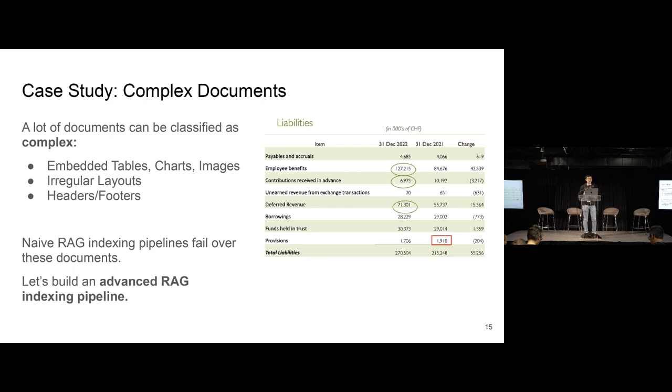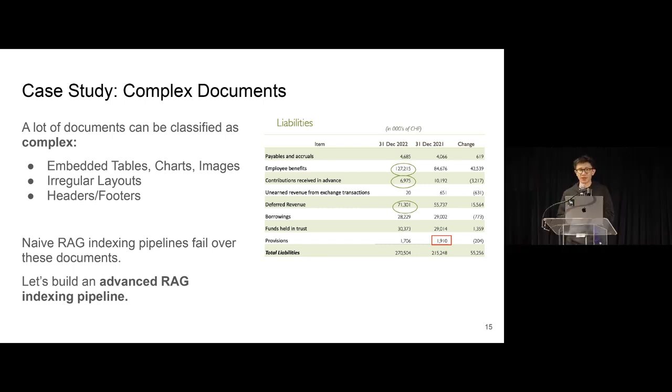A lot of documents can be classified as complex. So basically, instead of just having a paragraph of text, it might have a lot of other elements in it. It might have embedded tables. It might be a PowerPoint presentation with different spatial layouts. It might have charts either in the form of actual SVG shapes or in the form of rasterized image. There might be headers and footers that you might want to extract as metadata.